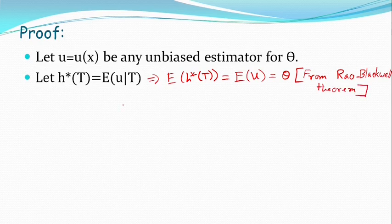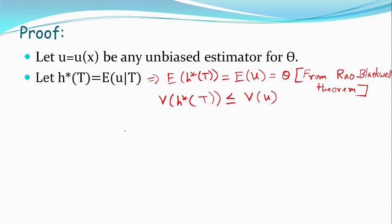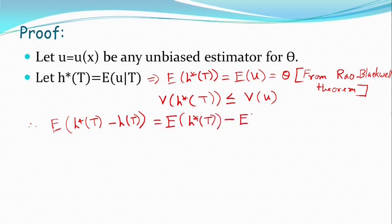So, according to Rao-Blackwell's theorem, h* of t-r variance ta minimum habay. That means variance of h* of t is less than or equal to variance of u. We have the statement that h* of t is an unbiased estimator of theta. So we have to write the expectation of h* of t minus h* of t, which is equal to expectation of h* of t minus expectation of h* of t. Now, this is equal to theta minus theta — the expectation of h* of t is equal to theta.